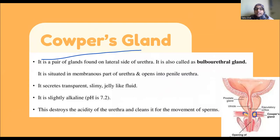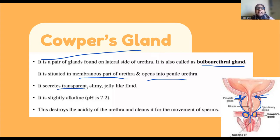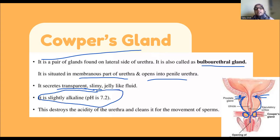The Cowper's gland, also known as the bulbourethral gland, is situated in the membranous part of the urethra and opens into it. It secretes a transparent, slimy, sticky, jelly-like fluid. This fluid maintains the pH of the semen — the sperm and fluid — at the appropriate level of 7.2, which is slightly alkaline.